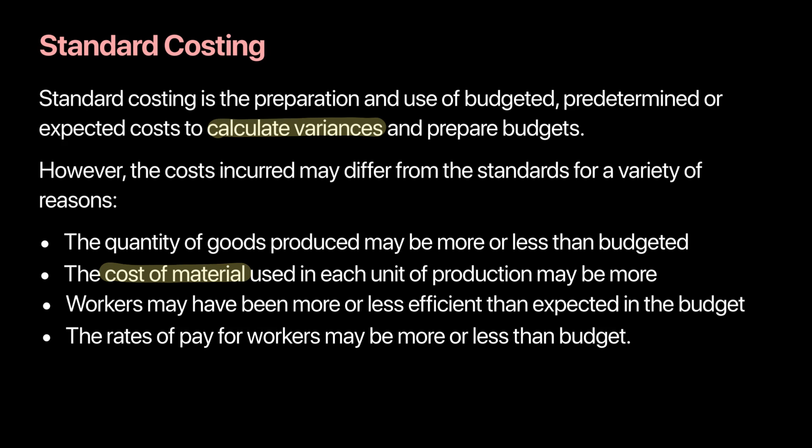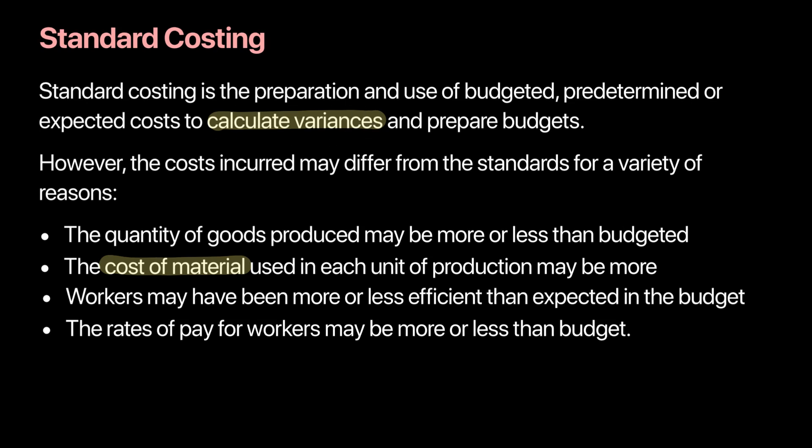In this topic, we focus on comparing the efficiency of the firm by looking at the budget set at the start and comparing it with what actually happened. The differences will be called variances. Standard costing is used by many different businesses, but it is most commonly used in manufacturing businesses.